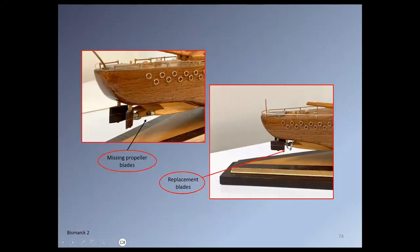Several blades of the three propellers were missing, and I replaced these with three-thousandths-of-an-inch-thick aluminum sheet glued to the shafts with CA glue. And note here that these rudders are the correct shape compared to the rounded one on Bismarck number one.